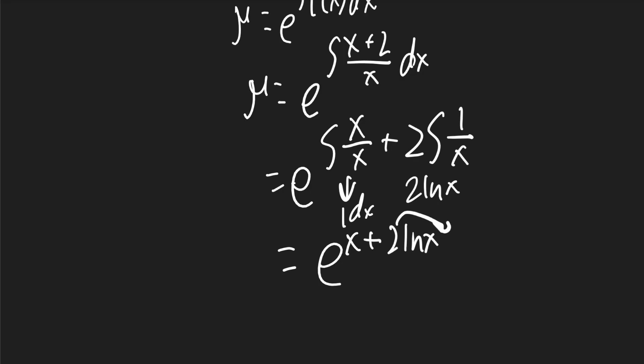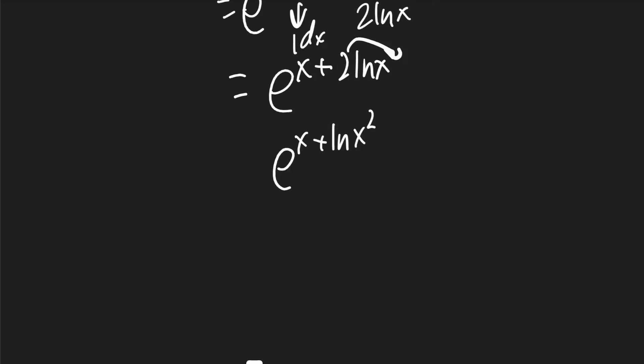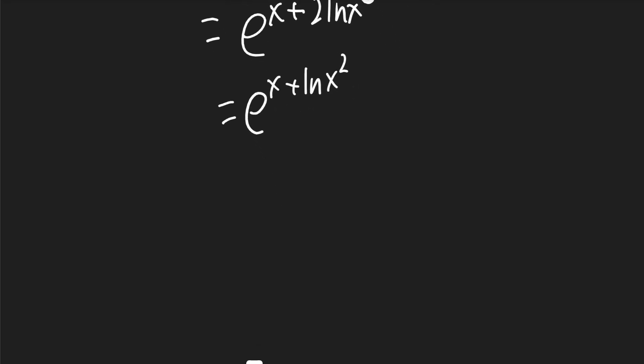That 2 will become the exponent for the x. It'll be e to the x plus ln of x squared. This can be split into two separate exponentials. First being e to the x.